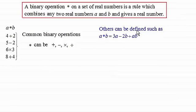But others can be defined, such as this one for example: a star b equals 3a minus 2b plus ab. So for instance, let's just give you an example of this. Suppose we had 4 star 1. Then according to this definition here, it's going to be 3 times the first value, so 3 times the 4. And then minus 2 times the second value, so 2 times the 1. And then plus the product of those two values, so 4 times 1 in this case. Work this out and you end up with 14.